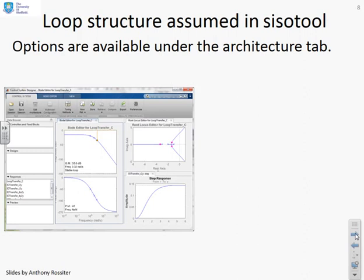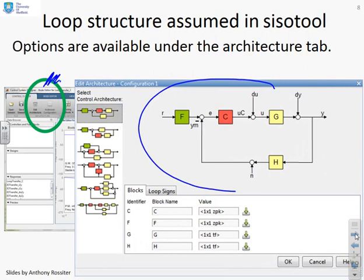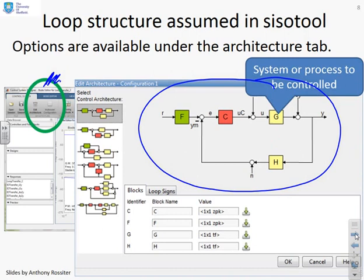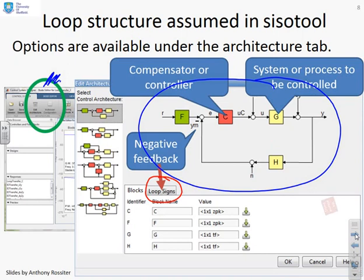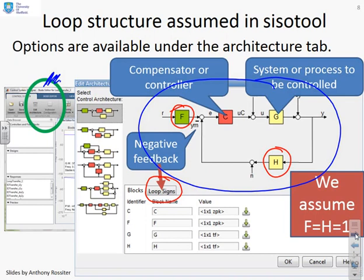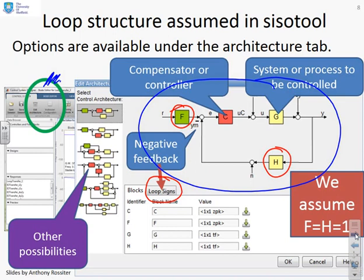Regarding the loop structure assumed in SISOTOOL: the options are available under the Architecture tab. Selecting it opens a window showing the basic architecture — a single loop with a process that SISOTOOL calls G and a compensator it calls F, with negative feedback assumed. You can change the sign of the feedback using the 'loop signs' tab. For this series, F and H are assumed to be one.